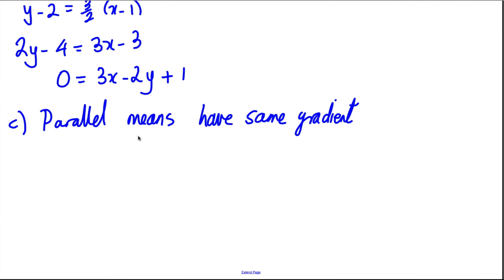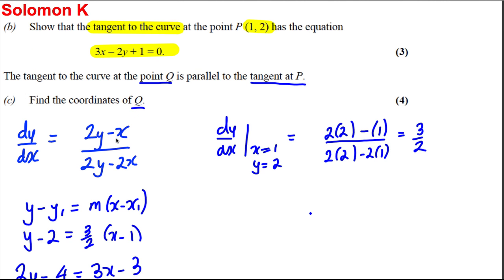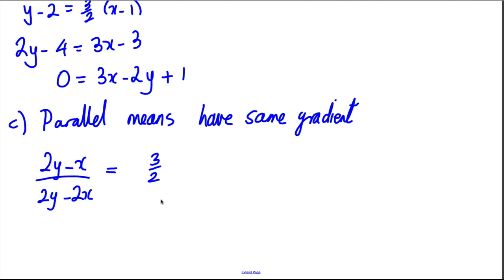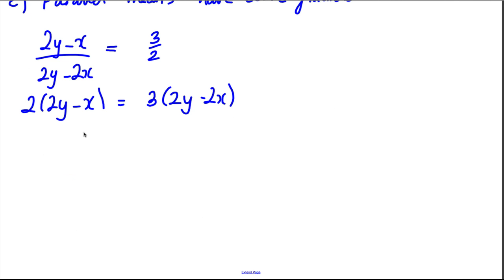We're going to set (2y minus x) over (2y minus 2x) equal to 3 over 2. Multiplying both sides by (2y minus 2x) and by 2 gives: 2(2y minus x) = 3(2y minus 2x). Expanding: 4y minus 2x = 6y minus 6x.